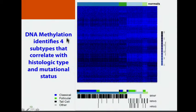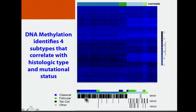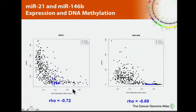On to the methylation work. The methylation profiling identifies four classes of tumors that generally correlate with histologic type and mutational status. Two groups on the left are mostly the classical type and tall cell type, enriched with BRAF mutations. On the other side, which is more similar to the normals, there's an abundance of the follicular variants and tumors with RAS mutations. MIR-21 and MIR-146b have both been worked on in thyroid cancer, but not at the methylation level. We show inverse expression between methylation and expression — interesting leads for us to work on.